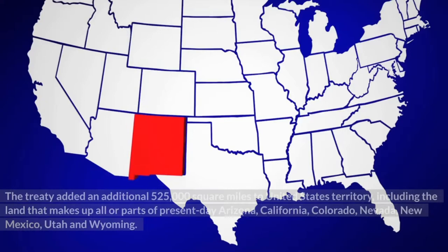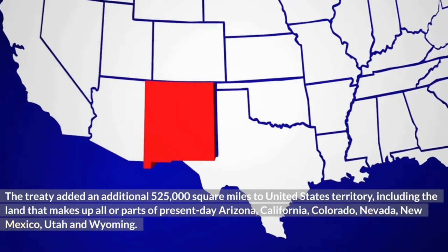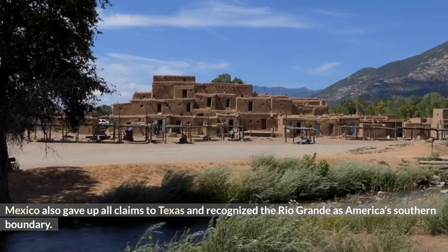The treaty added an additional 525,000 square miles to United States territory, including the land that makes up all or parts of present-day Arizona, California, Colorado, Nevada, New Mexico, Utah, and Wyoming. Mexico also gave up all claims to Texas and recognized the Rio Grande as America's southern boundary.